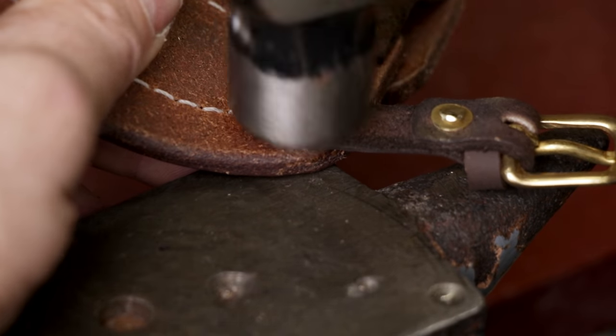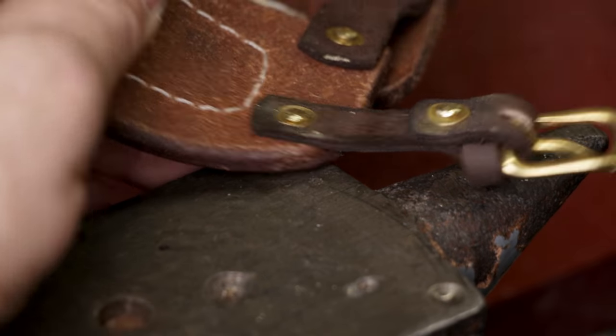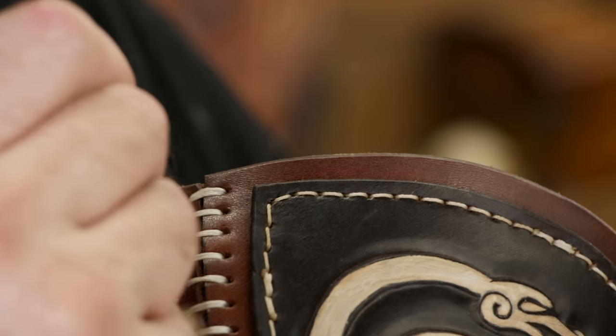And now I just put the shoulder on my arm so I can check where I want the holes on my strap. And then I punch those holes. And then I'm just going to mark some holes to mount my shoulder to my armor of choice.